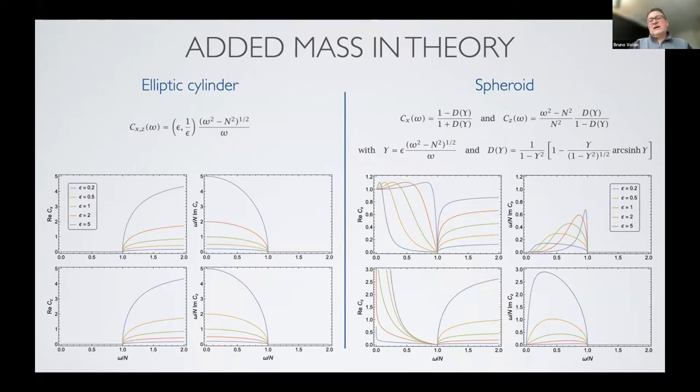Now, when we move to 3D and it's no longer a horizontal elliptic cylinder but a spheroid, we get the same wave drag only for frequencies below the buoyancy frequency. But added mass becomes a bit more complicated. It exhibits slightly different variations depending on the aspect ratio of the spheroid.